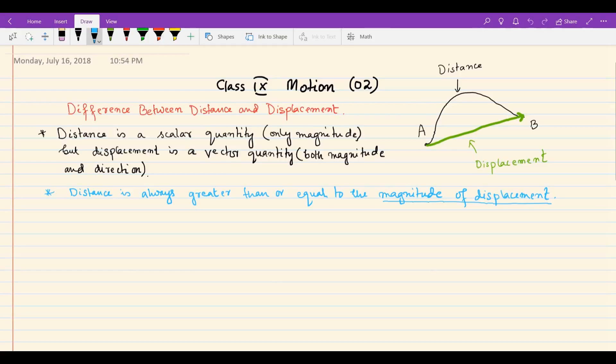Similarly, distance and displacement cannot be compared in terms of which is greater or smaller because they are different quantities. However, displacement has magnitude, so we can compare distance with the magnitude of displacement.